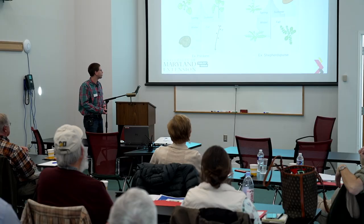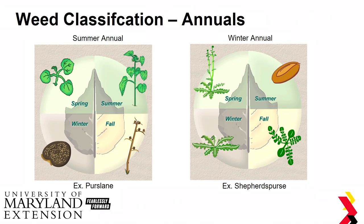An important thing about weed classification is whether you're dealing with annuals or perennials. Summer annual weeds germinate in the spring, their vegetative period is in the summer, and they set seed in the fall. Winter annual weeds germinate in the fall, grow more in the winter, then set seed in the spring. This really affects when you want to control them — summer annuals are best controlled in spring, and winter annuals are best controlled in fall and early winter.